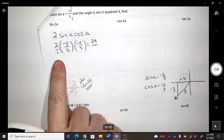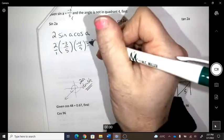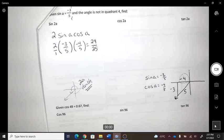And on the bottom, you would have a 1 times a 5 times a 5. So that's the value, 24 over 25.